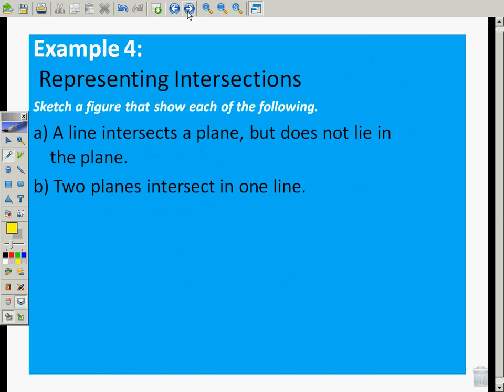Example four. Representing intersections. This is something for you to do on your own. A line that intersects a plane but does not lie in the plane. And two planes that intersect in one line. Key for this one. The second part you've probably already seen during this presentation. So try that out. Tomorrow. Come to class. Have those two done. We'll talk. And I look forward to seeing you then. Thanks for watching.